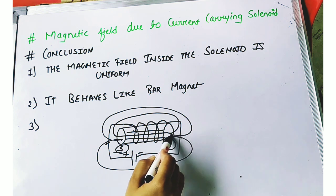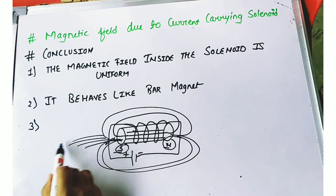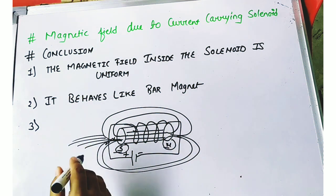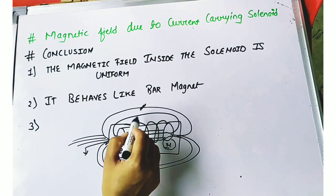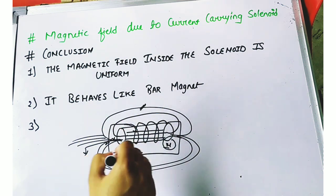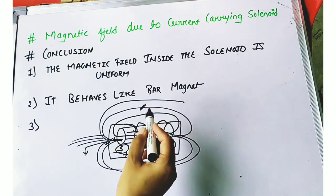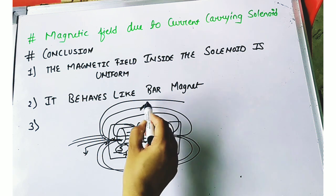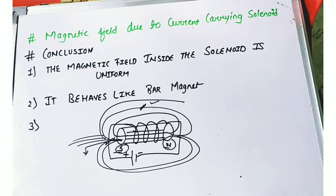When current flows in a clockwise direction it is south, and anticlockwise it is north. The magnetic field intensity is maximum near the poles because the magnetic field lines are very dense and close together there. The field is minimum outside or at the center of the solenoid, because there the field lines are spread far apart, so the effect is less and the magnetic field is weaker. These are all the conclusions drawn from the solenoid. Thank you.